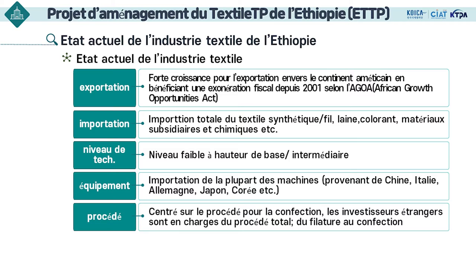Les fibres synthétiques ne sont pas produites localement ; toutes les fibres synthétiques, la laine, les colorants, les matériaux auxiliaires et les produits chimiques sont tous importés. Le niveau technique peut être dit faible et la plupart des machines textiles sont également importées de l'étranger. La plupart des industries sont concentrées dans le processus de couture. Il est donc urgent de renforcer les capacités techniques de chaque processus textile et de chaque chaîne de valeur.